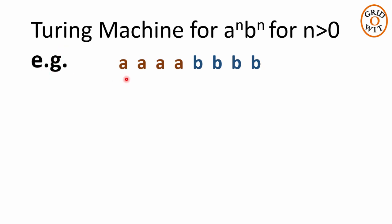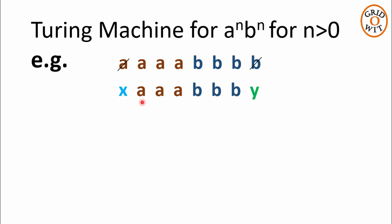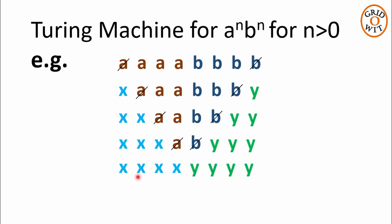Let us take an example. For n equals 4, we have four a's followed by four b's. In the first iteration, the Turing machine will delete the leftmost a and, for that leftmost a, it will delete the rightmost b — replacing the a with x and the b with y. The remaining string is then three a's followed by three b's. In the second iteration, the Turing machine deletes the leftmost a and rightmost b again, replacing a with x and b with y. The Turing machine keeps doing this iteratively until it is left with all x's followed by all y's but no a's or b's. That means both a's and b's are depleted together, and if this condition is satisfied, the string is accepted.